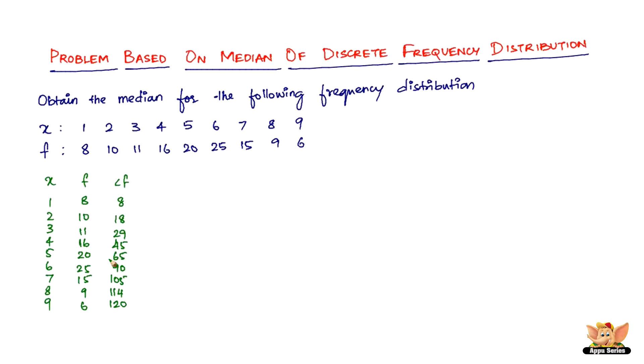The next step is to sum up the entire frequency which is 120. Now what we have to do is divide N by 2, which is 120 by 2 and that gives you 60. Now find a number that is greater than 60 in the cumulative frequency column.